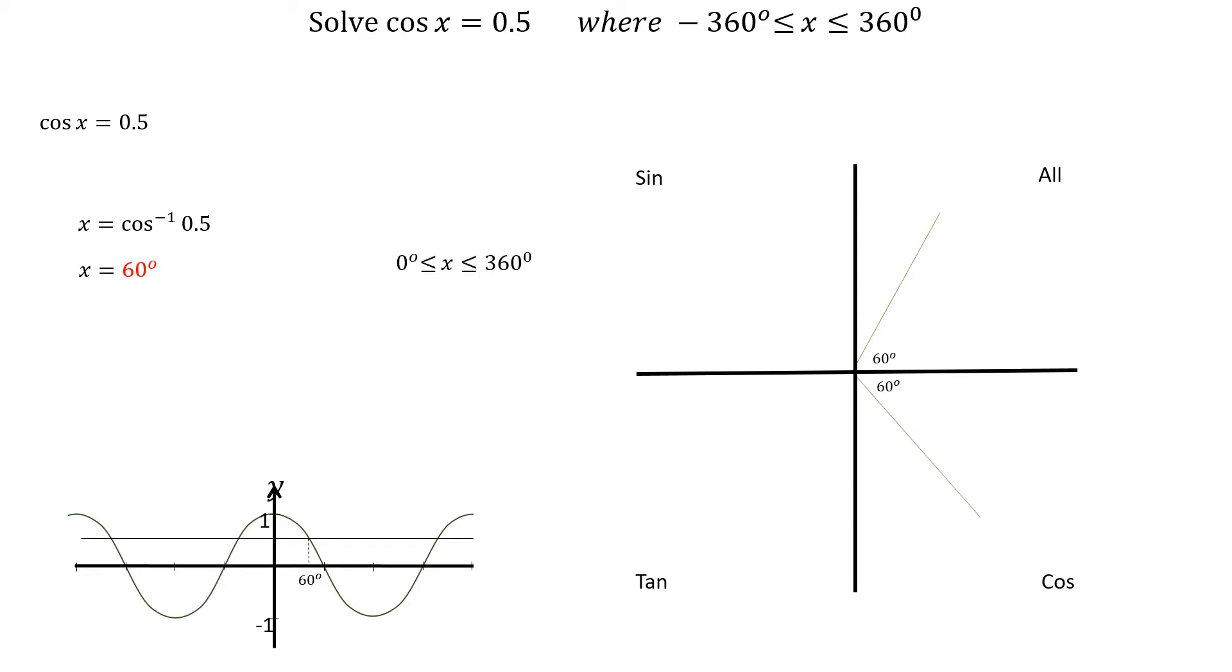Starting with x between 0 and plus 360 degrees, we go in an anti-clockwise direction. The first angle is at 60 degrees and the second is at 360 minus 60 degrees, which is 300 degrees.